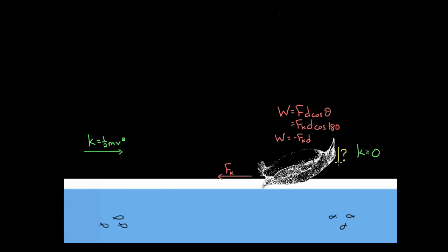But this still doesn't answer Walter's question. Where did the kinetic energy go? Friction may have done negative work on this penguin, but where did that energy end up? And you probably have a good idea, because when two surfaces rub together, some of that energy of motion is going to get transformed into thermal energy in those two surfaces.